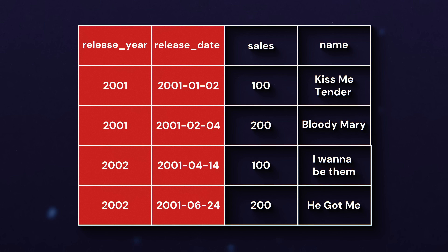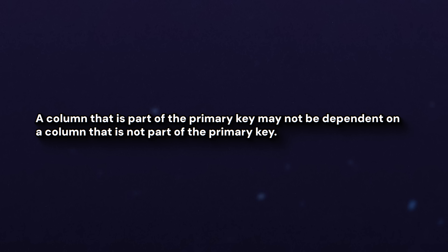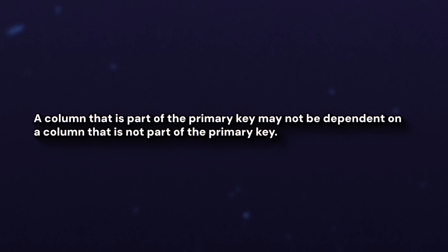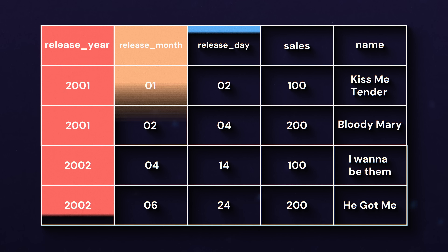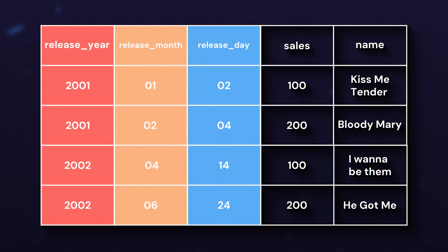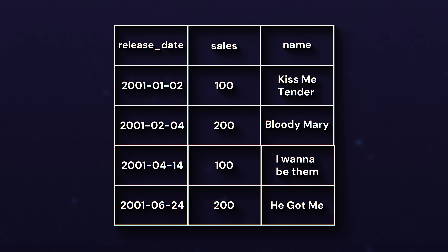So we have a column in the primary key that is dependent on a column that's not part of the primary key. That doesn't break second or third normal form, but it does create duplicate data, and Boyce-Codd normal form fixes this edge case. One way to fix this is to store year, month, and day in separate columns. But honestly, we could just get rid of the release year column entirely because we already have the more specific date column.